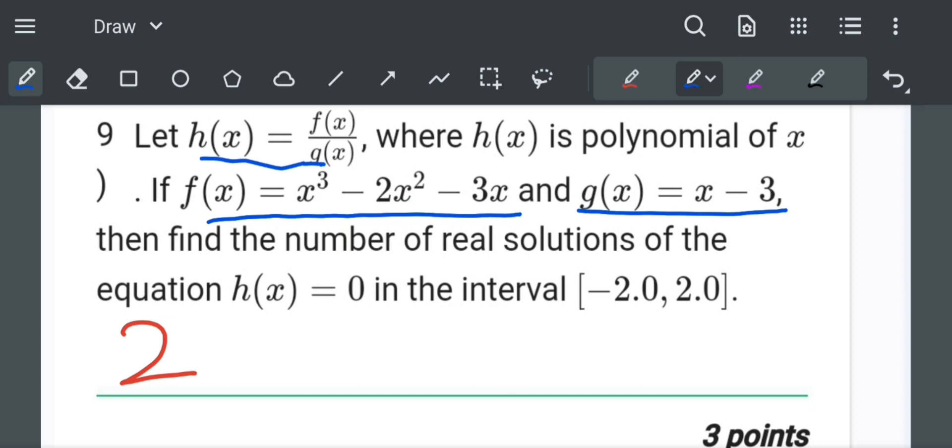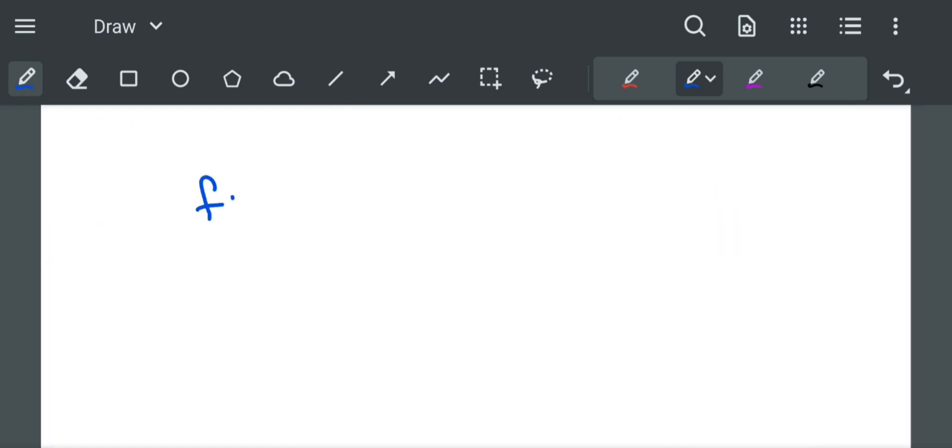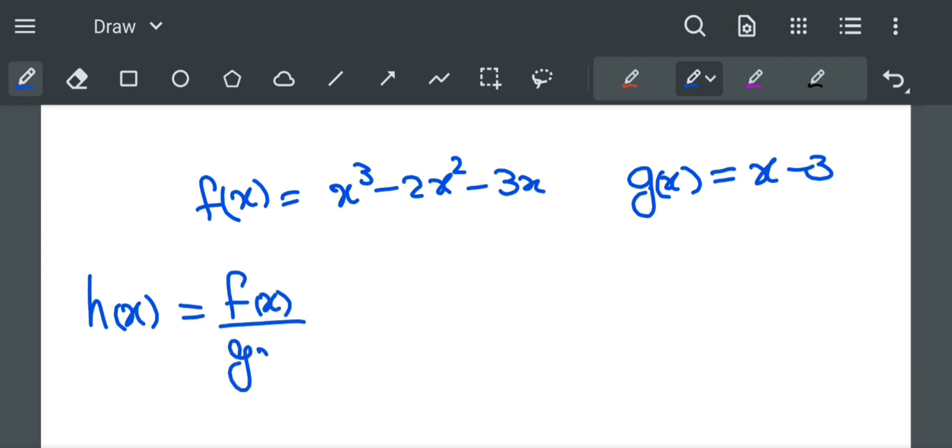x minus 3, then find the number of real solutions of equation h of x equal to 0. So f of x is equal to x cube minus 2x square minus 3x and g of x is equal to x minus 3. And also h of x is equal to f of x divided by g of x.